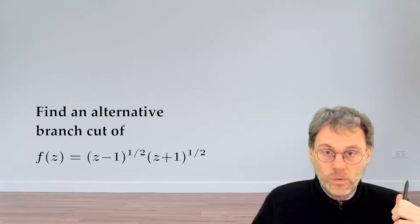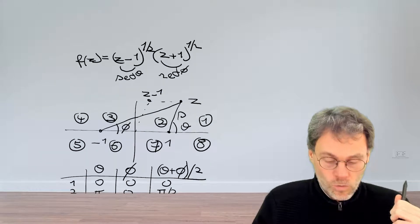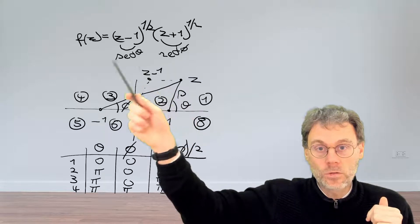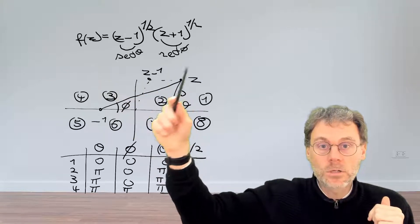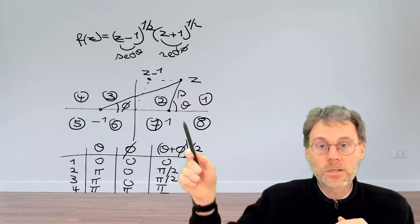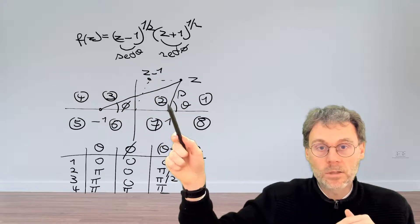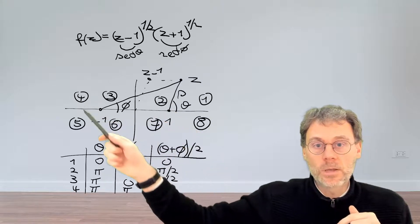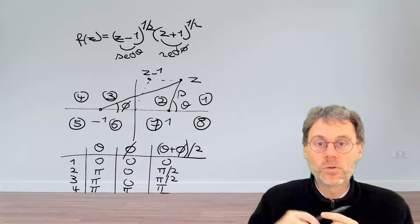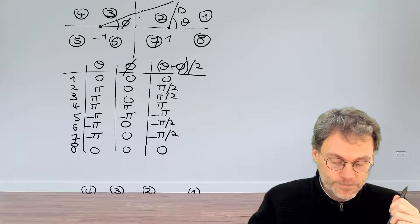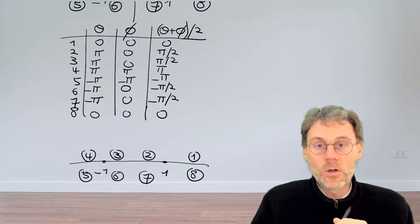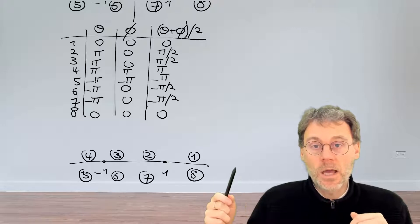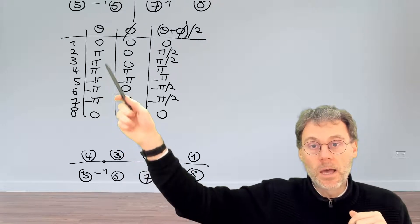Let's revisit what we had for the previous calculation. What we did is we expressed the arguments of the two square roots in polar coordinates with an angle theta and an angle phi. So theta is the angle centered around minus 1, and phi is the angle centered around plus 1. We identified some important points around the real axis and made a table where we applied the conventional choice of branch cuts for both theta and phi.